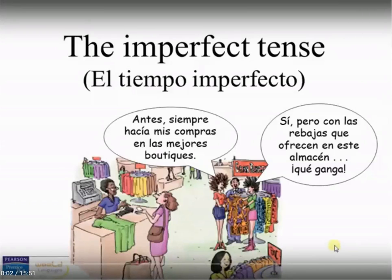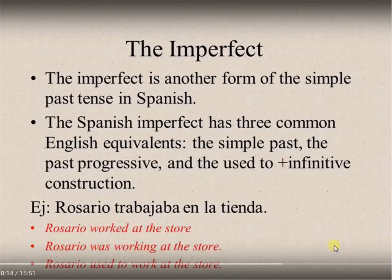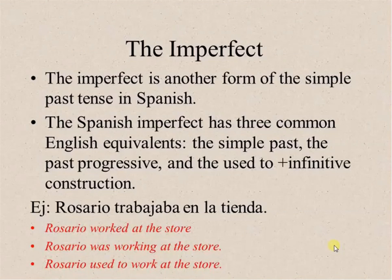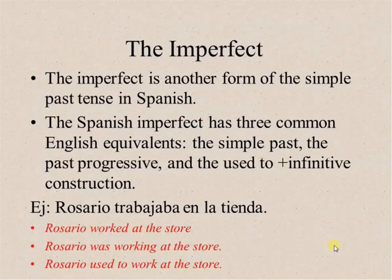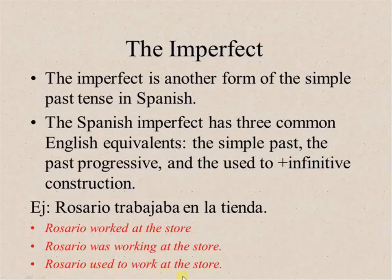Hola! Today our class is about the imperfect tense, el tiempo imperfecto. The imperfect is another form of the simple past tense in Spanish. The Spanish imperfect has three common English equivalents: the simple past, the past progressive, and the used to plus infinitive construction. For example, the sentence 'Rosario trabaja en la tienda' could mean Rosario worked at the store, Rosario was working at the store, or Rosario used to work at the store.